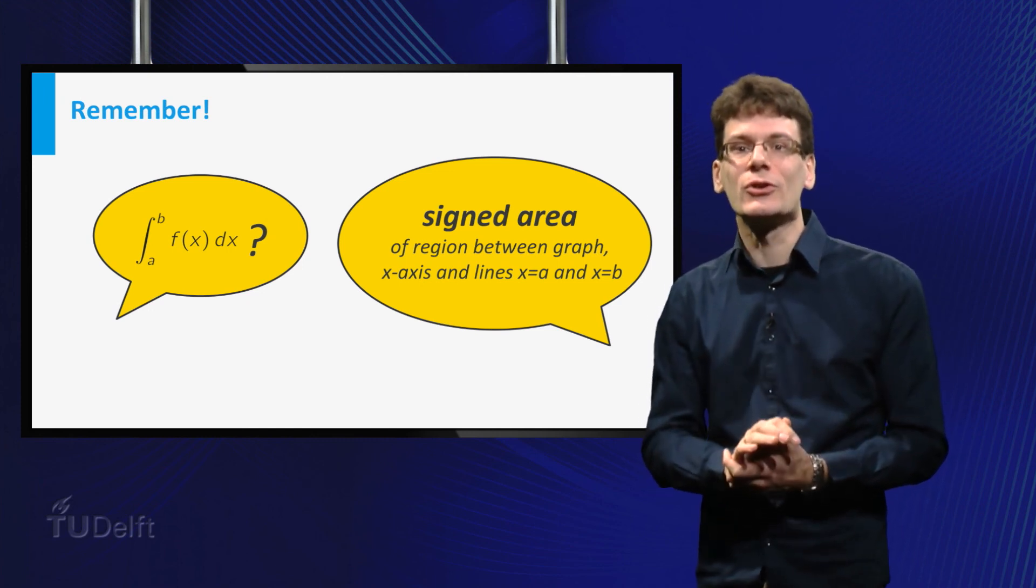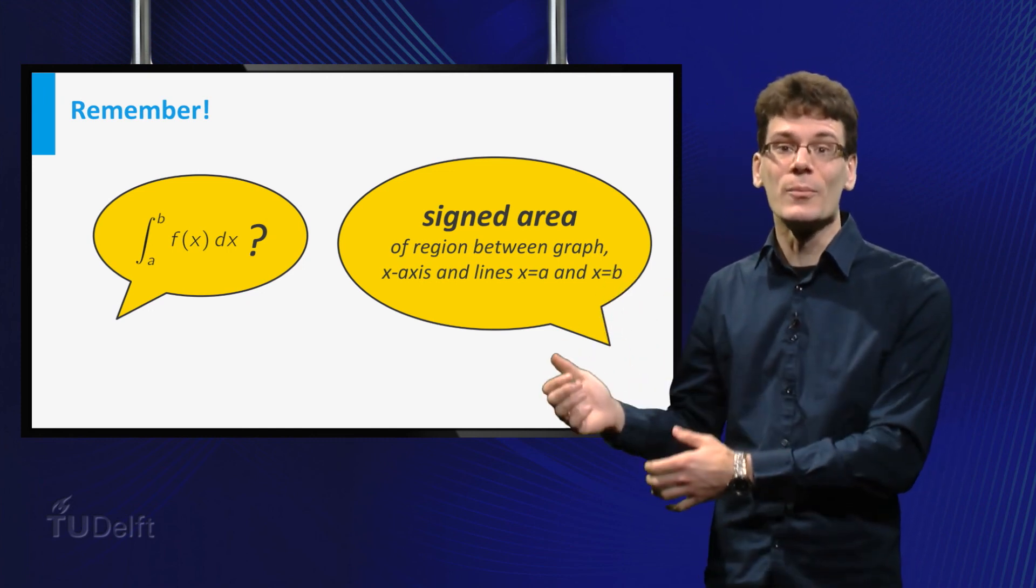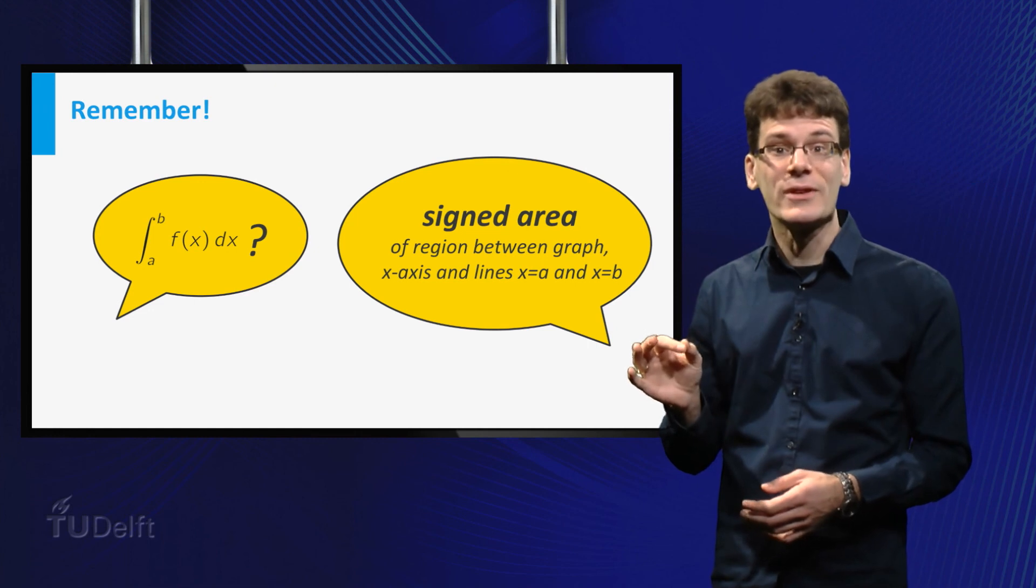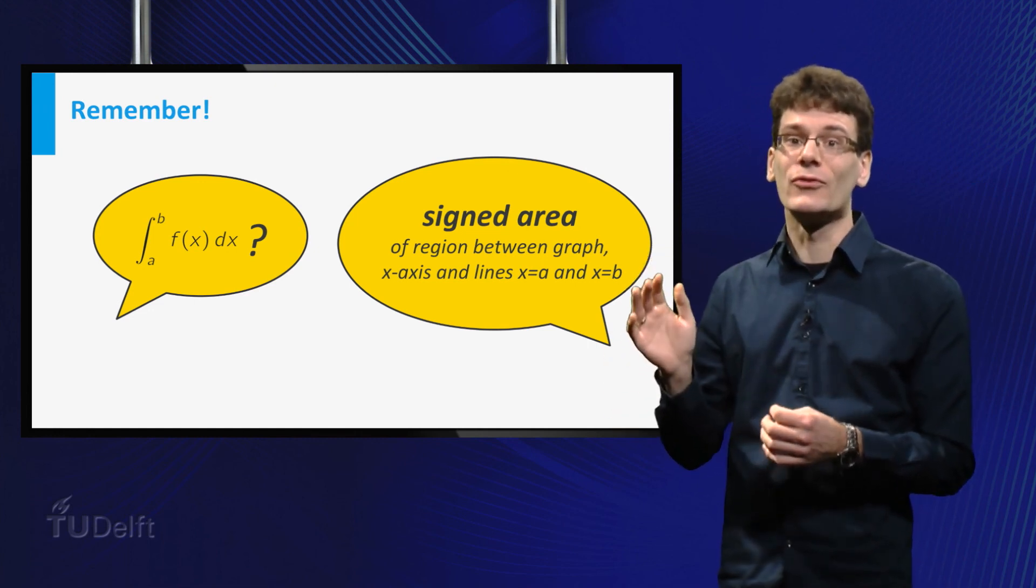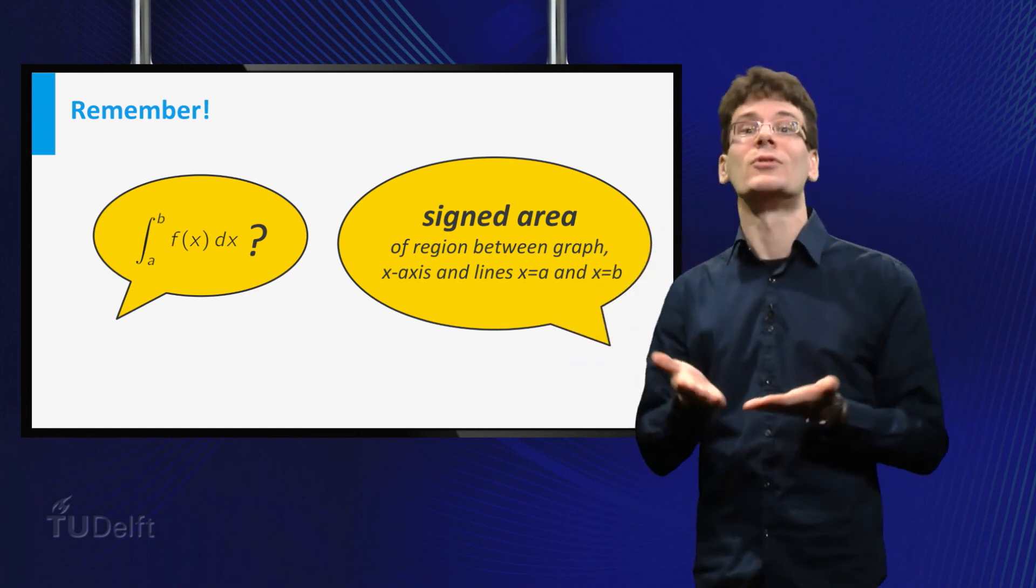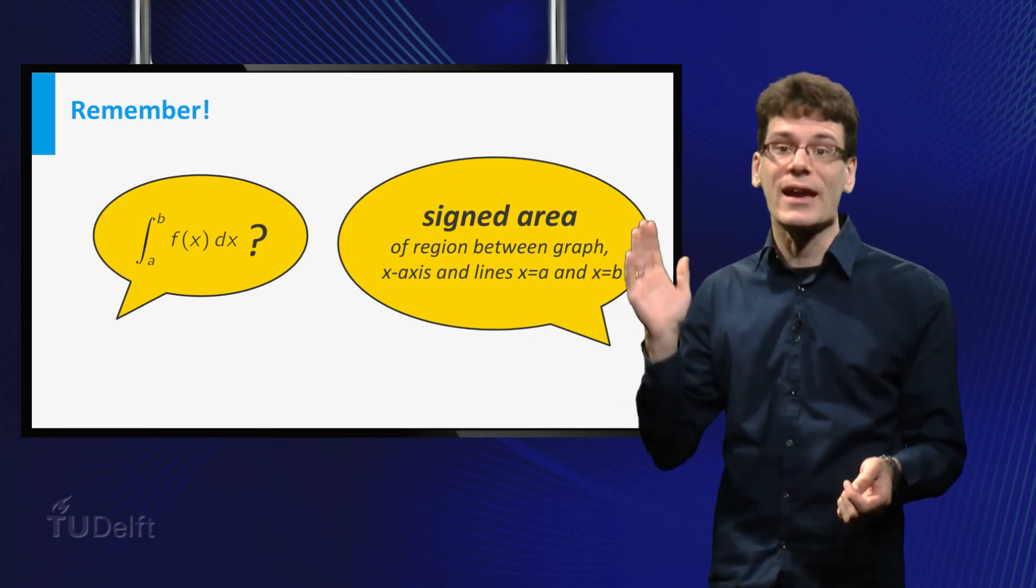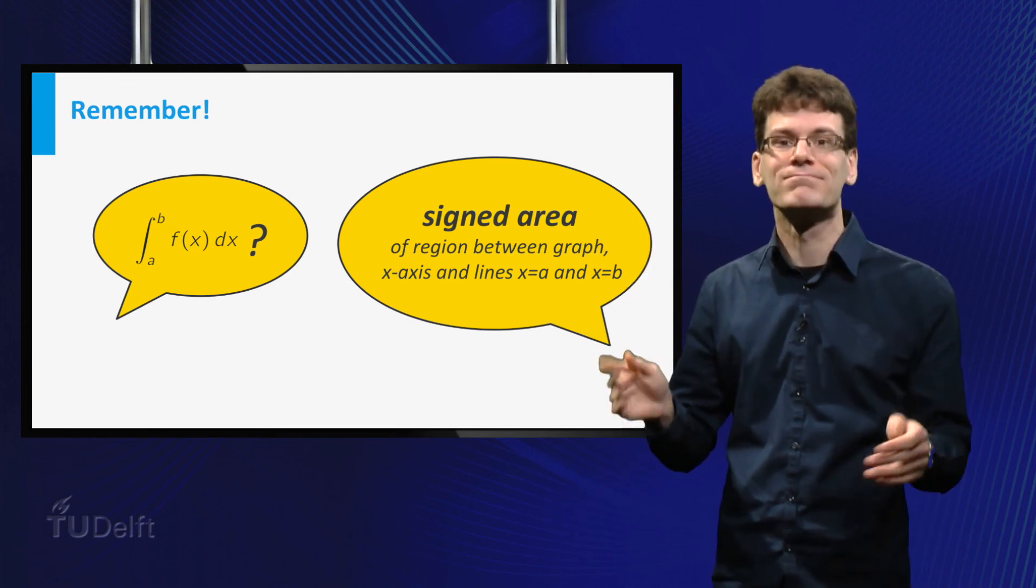So let me return to the original question: what does this integral mean? The correct answer is, it is the signed area of the region enclosed by the graph, the horizontal axis, and the lines x equal to a and x equal to b. Please remember!